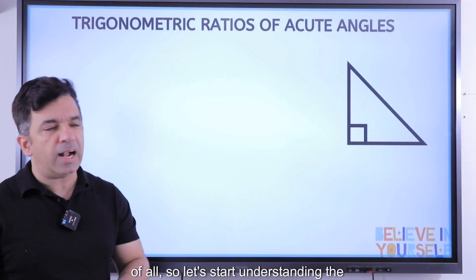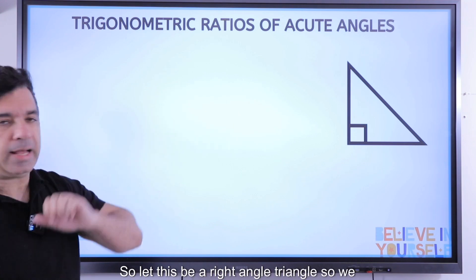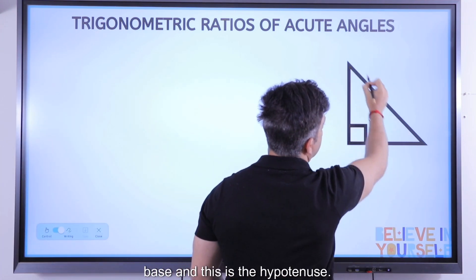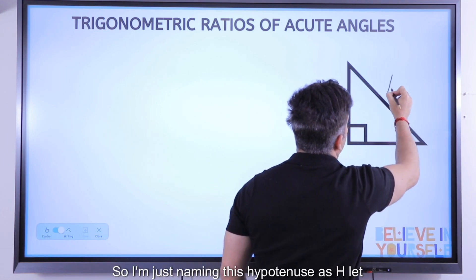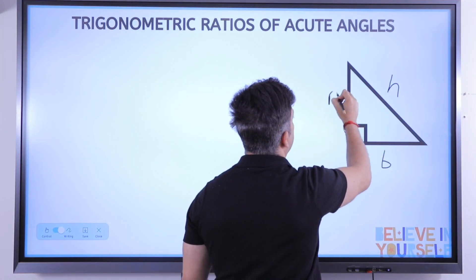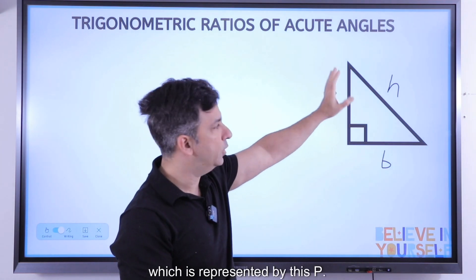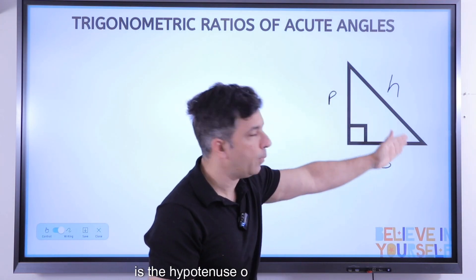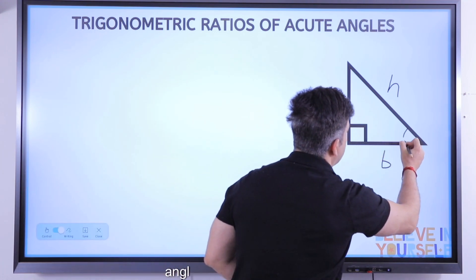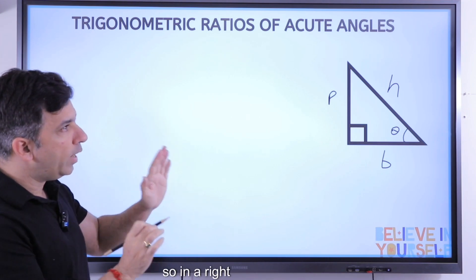Let's understand the basics of a right angle triangle. We can see that this is the height, this is the base, and this is the hypotenuse. I'm naming the hypotenuse as H, the base as B, and the perpendicular as P, just for convenience. This is the base of the triangle, this is the hypotenuse, and let us name this angle as theta. So in a right angle triangle...